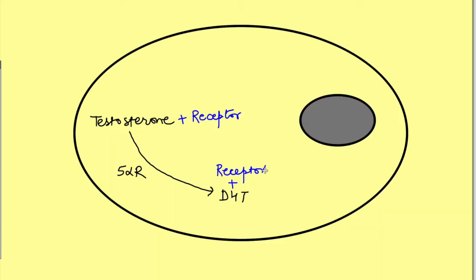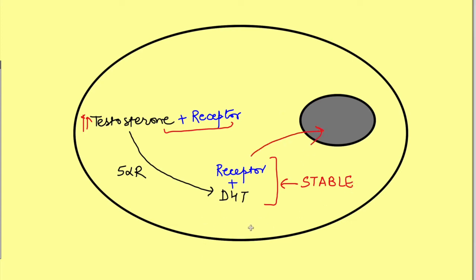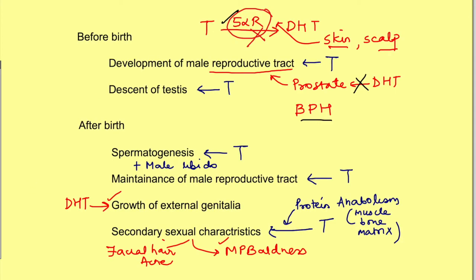The formation of DHT is a way of amplifying the action of testosterone on target tissues. DHT and testosterone combine with the same receptor, but the combination of DHT with that receptor is more stable than the testosterone-receptor complex, which is why it is able to act better. This is how DHT amplifies the action of testosterone in the tissues — remember this, as we will use it to solve a question shortly.